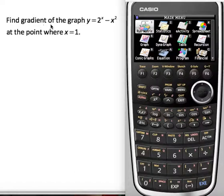Okay, so for a quick look at this question: find the gradient of the graph y equals 2 to the power of x minus x squared at the point where x equals 1.